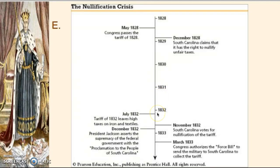Eventually in 1832, a second tariff comes about, heightening the tension in South Carolina between the state and the federal government over who controls whether these tariffs are paid. South Carolina will vote for nullification of the tariff, and they also threaten to secede if forced to pay it. The idea of secession is coming out — really the second time, the first being the Hartford Convention.